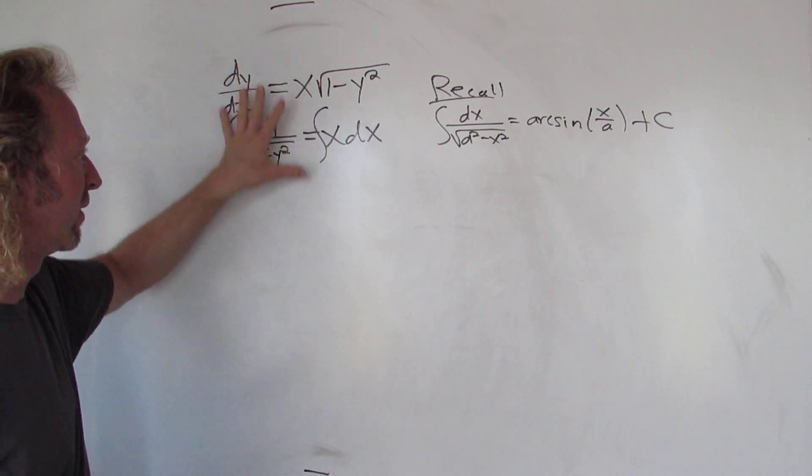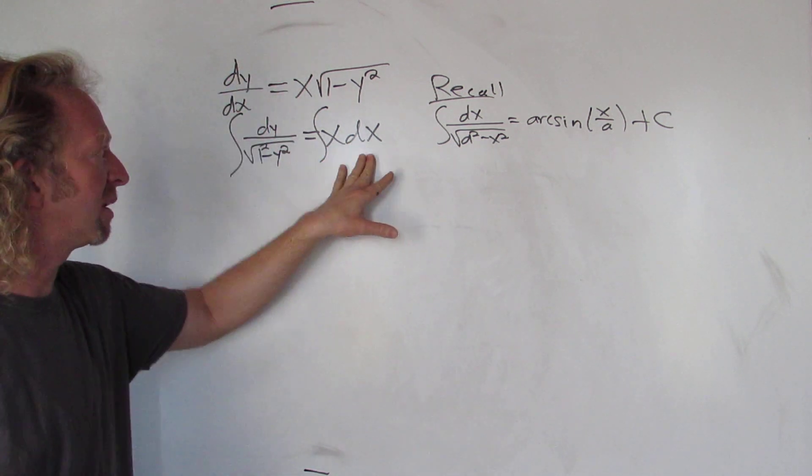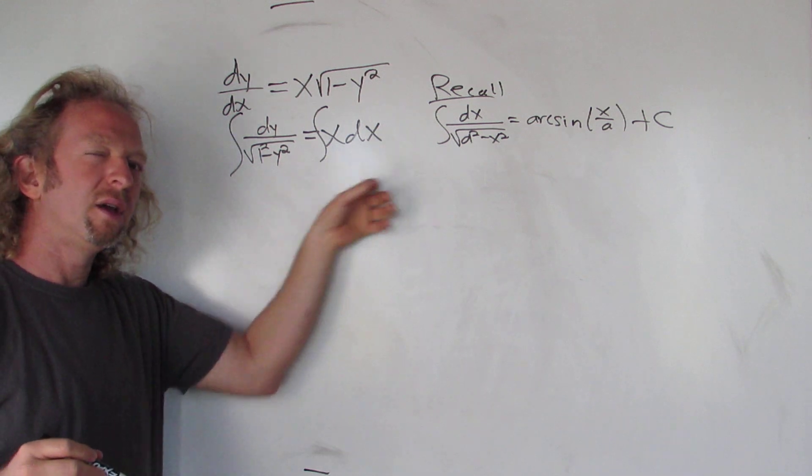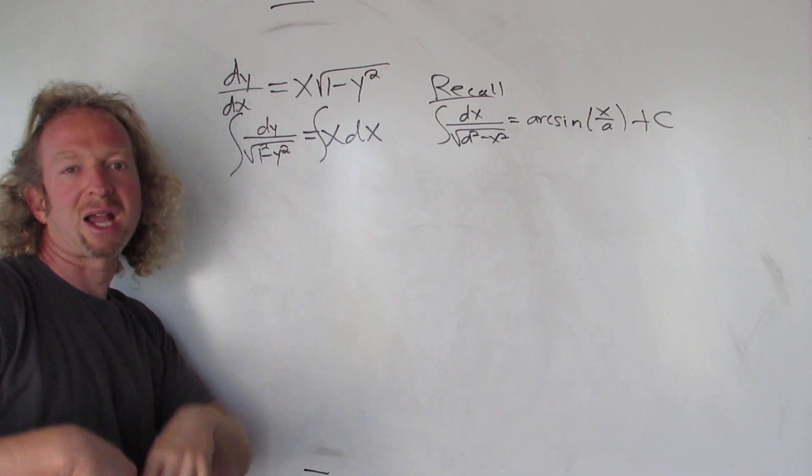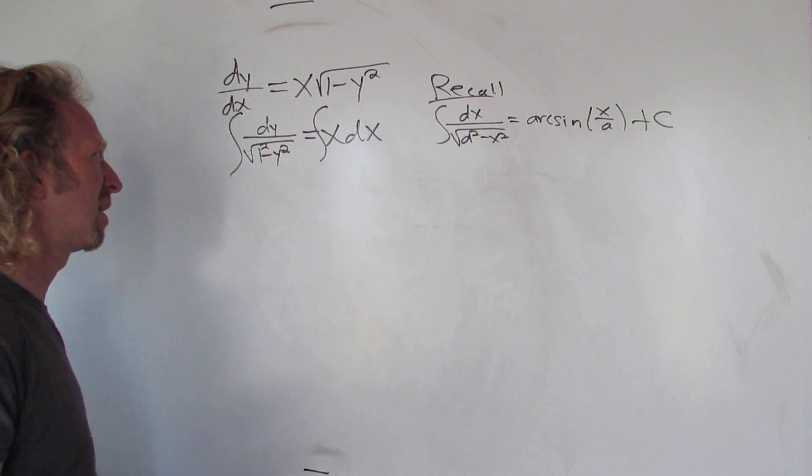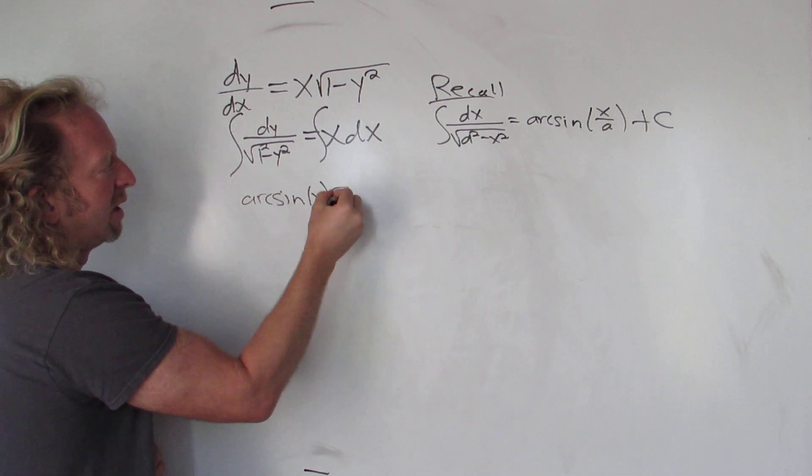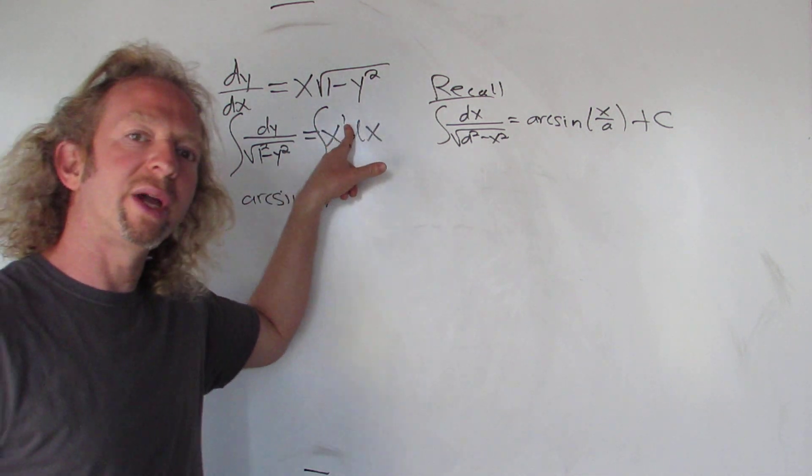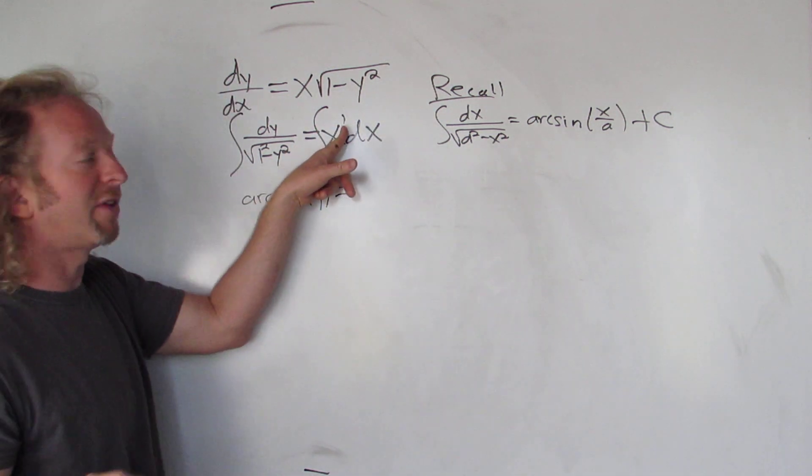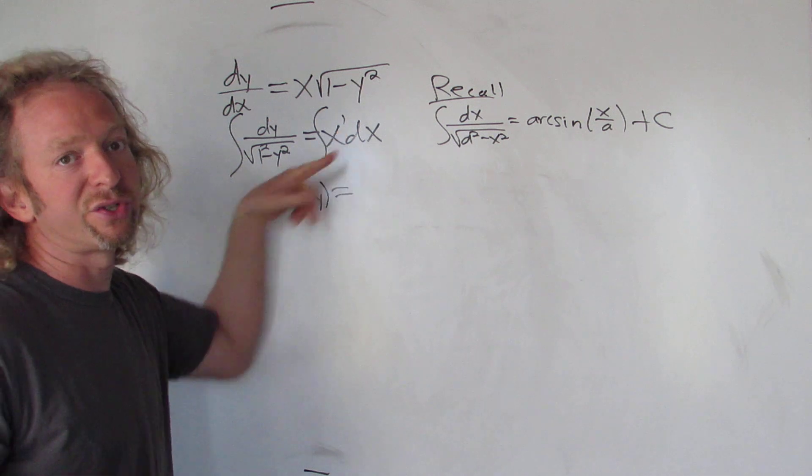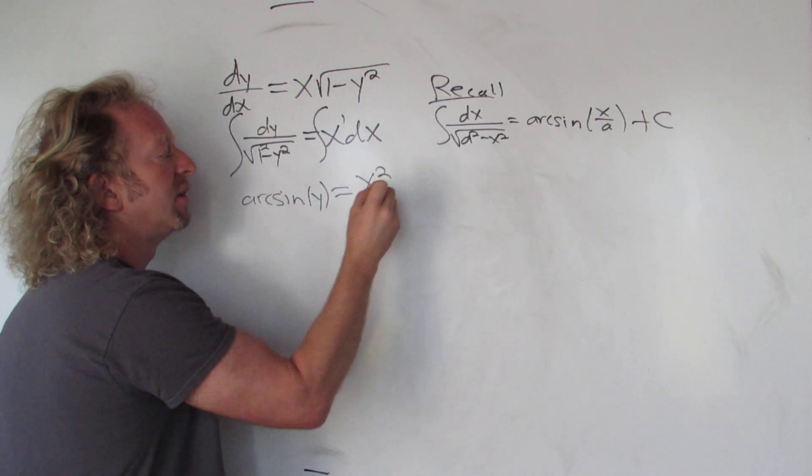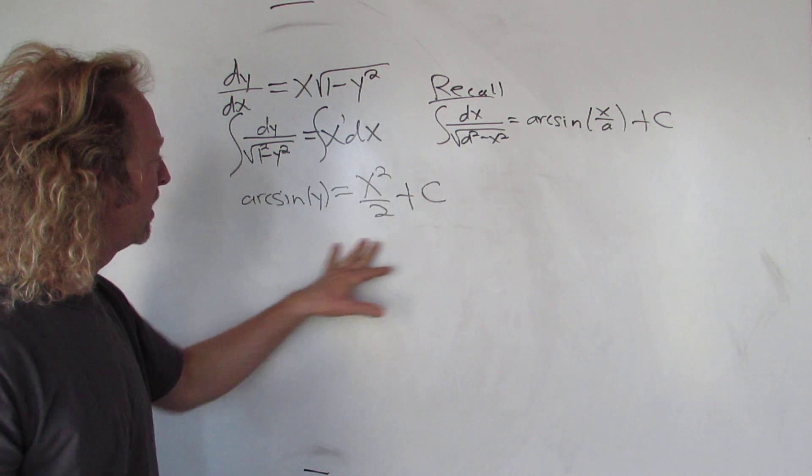When we integrate this, we also add a constant. You don't have to add it twice because you can subtract and rename your constant, so just add the constant once. This will be arcsin of y. And for this one we use the power rule. The power rule says you can add one and divide by that number, so one plus one is two, so you get x to the two divided by two, then we add our constant.